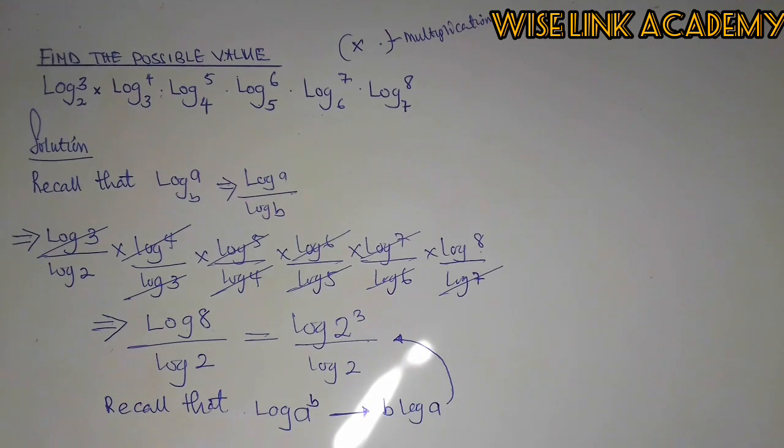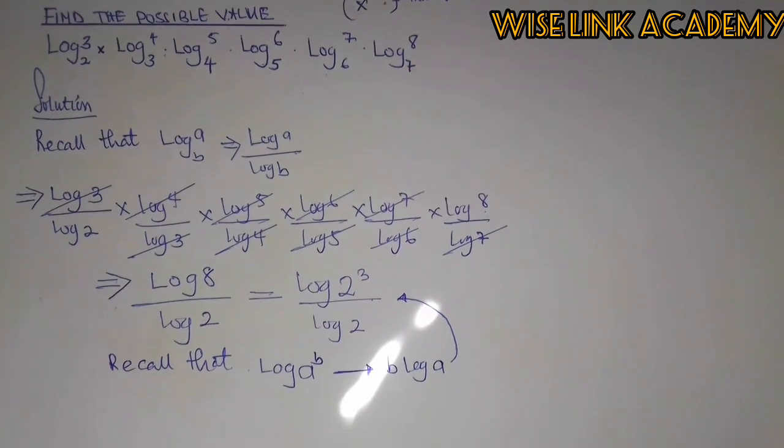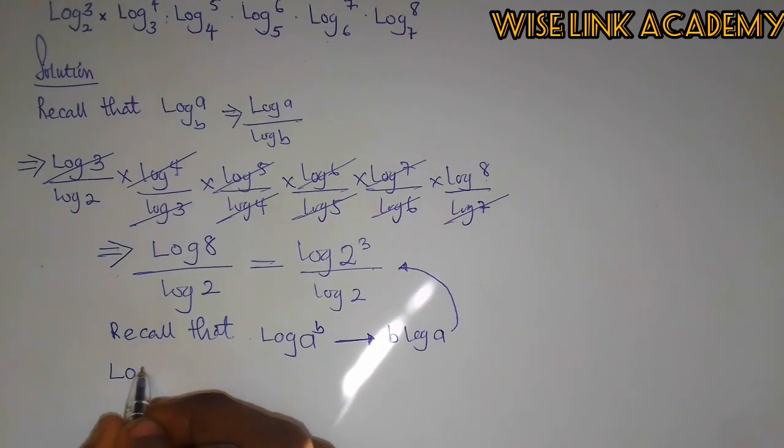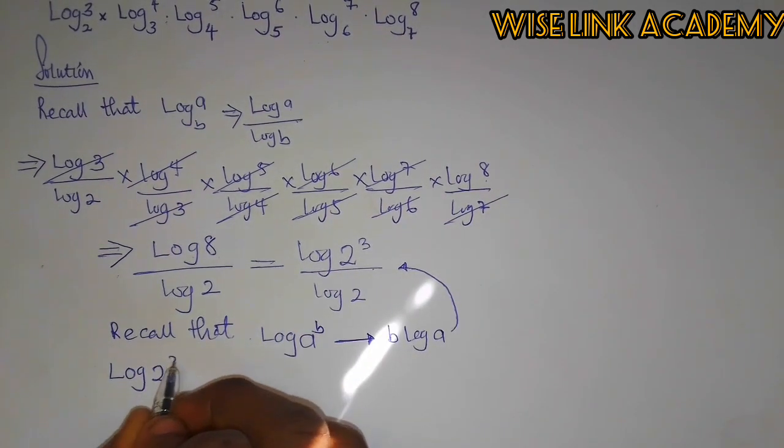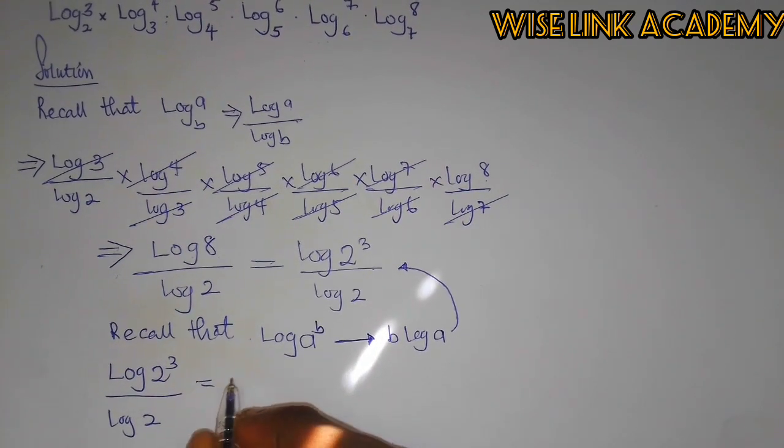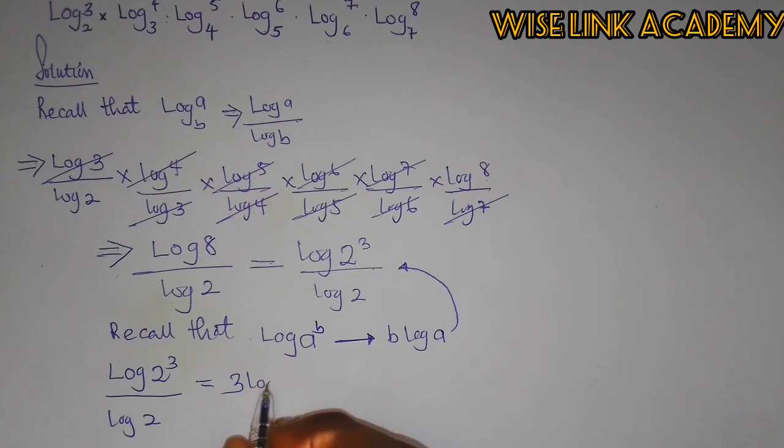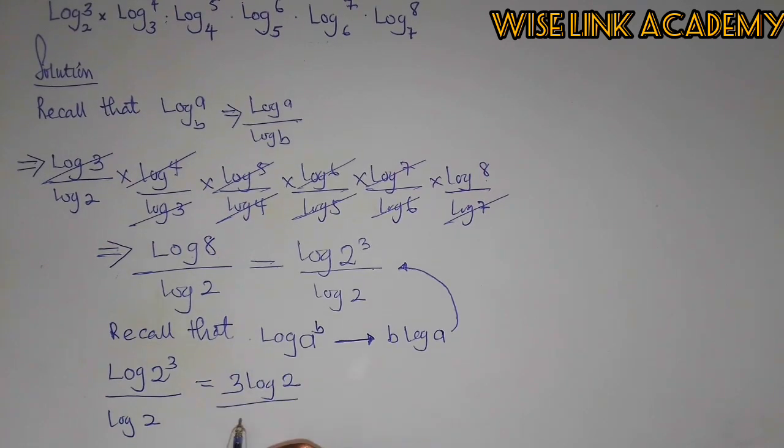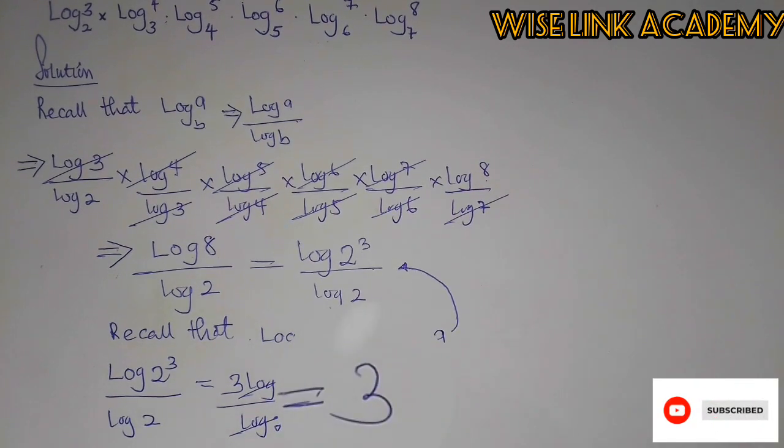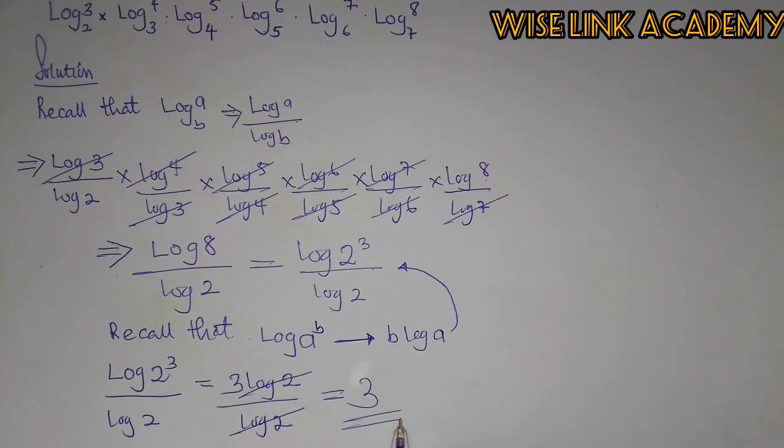So doing that, I will be having log 3 squared 3 over log 2. So that becomes 3, this was called 3 log 2 over log 2. So log 2 cancel out log 2 and left it towards 3. So my answer here is 3.